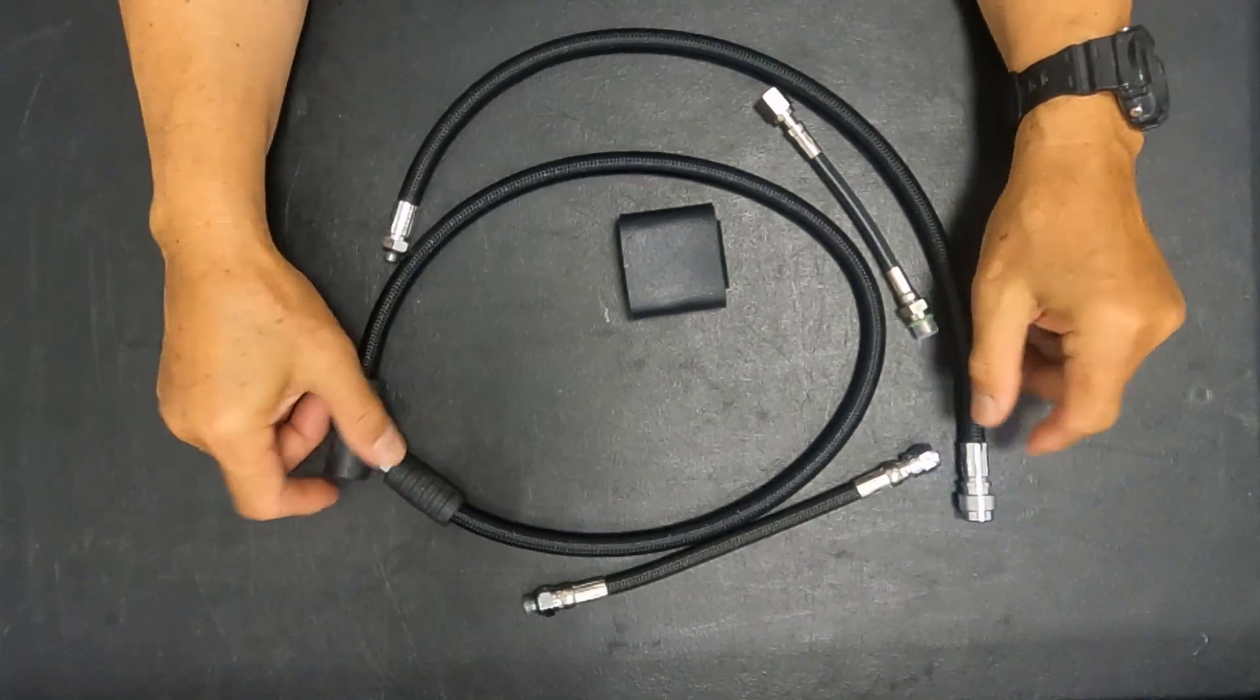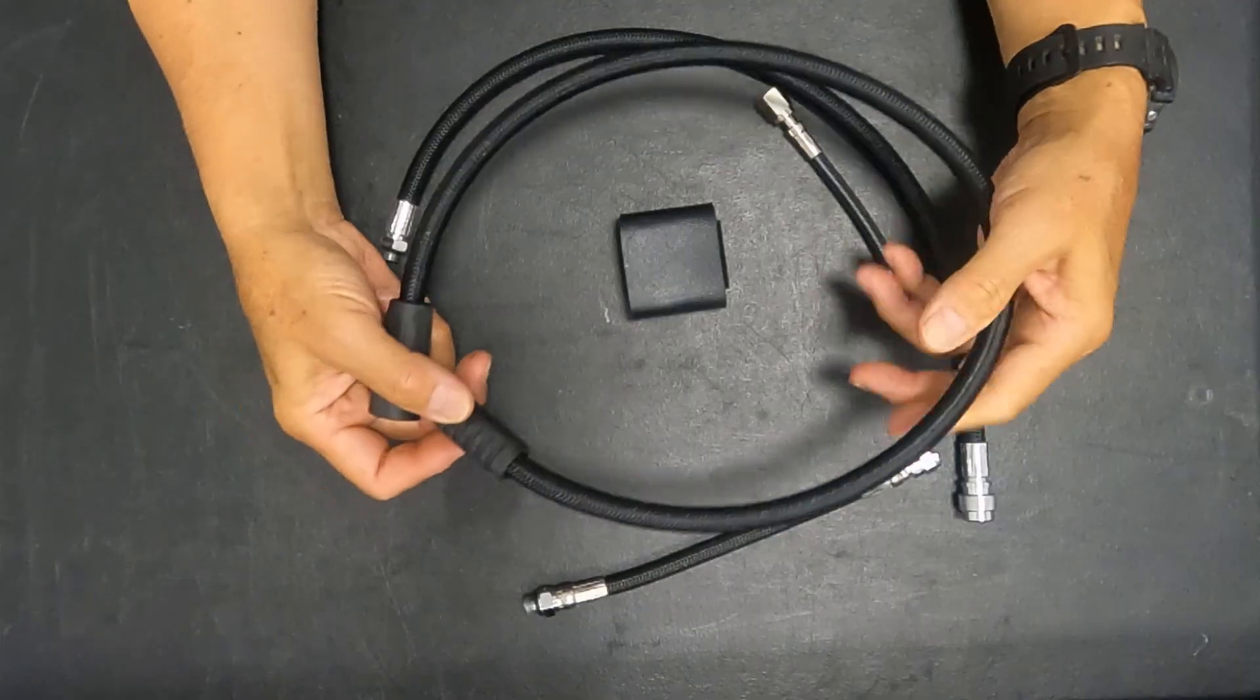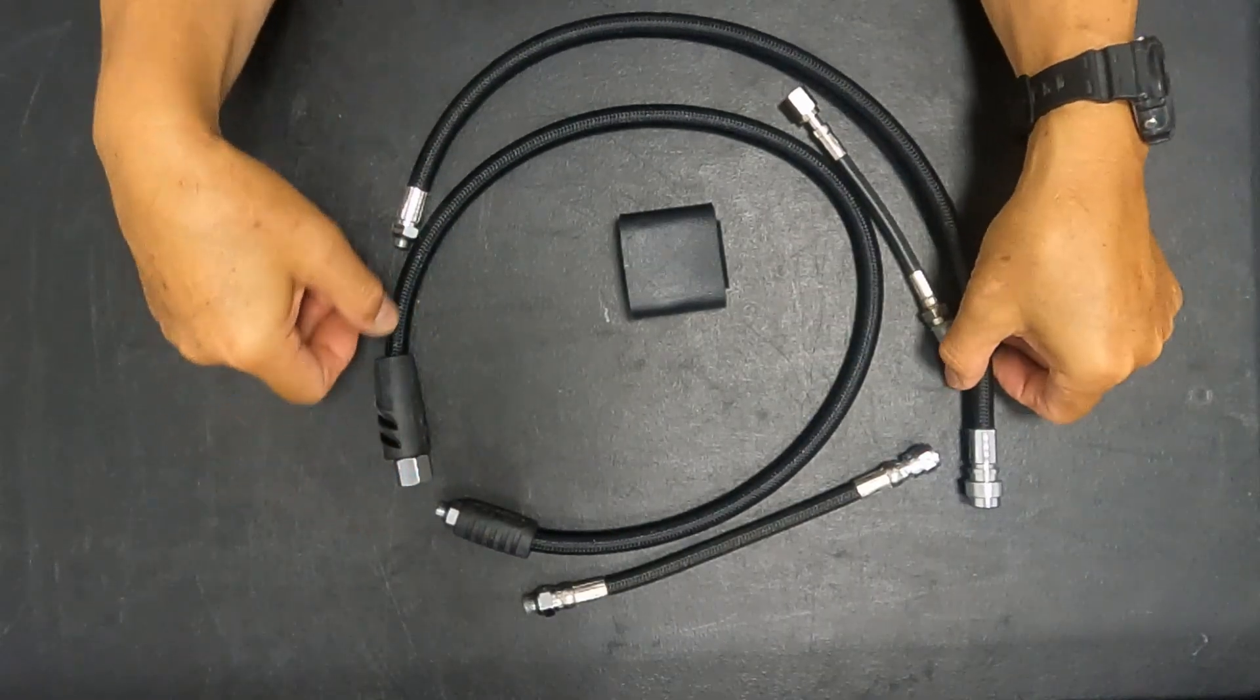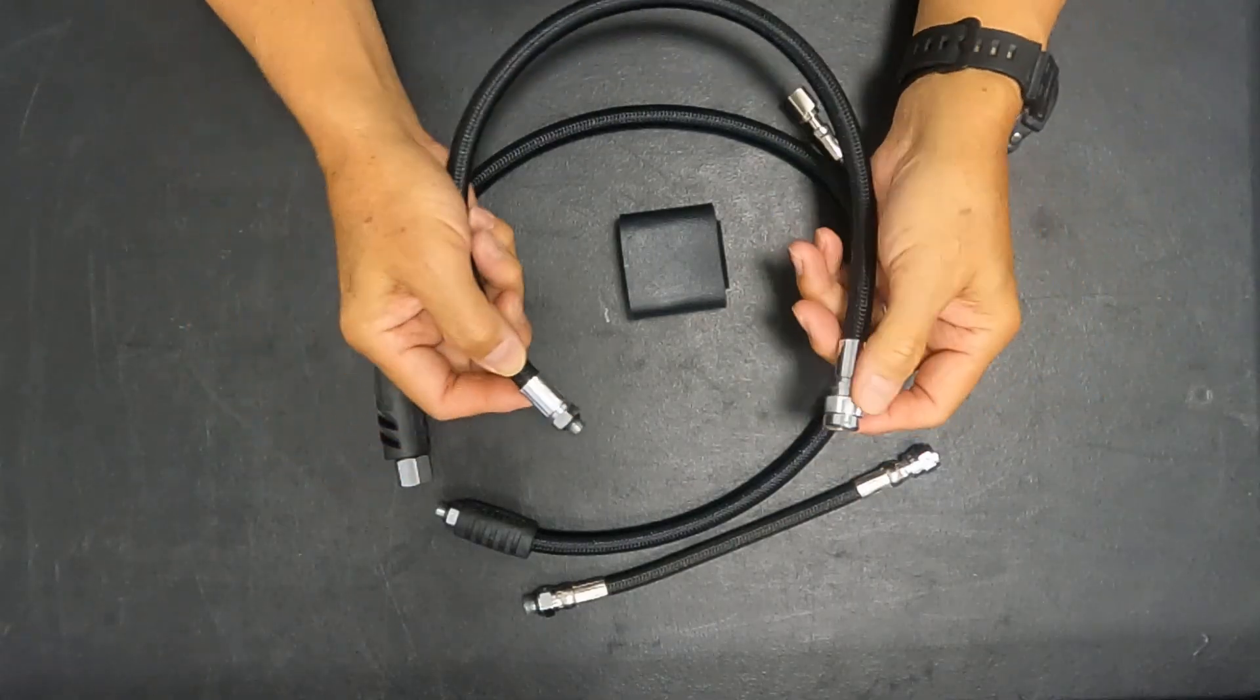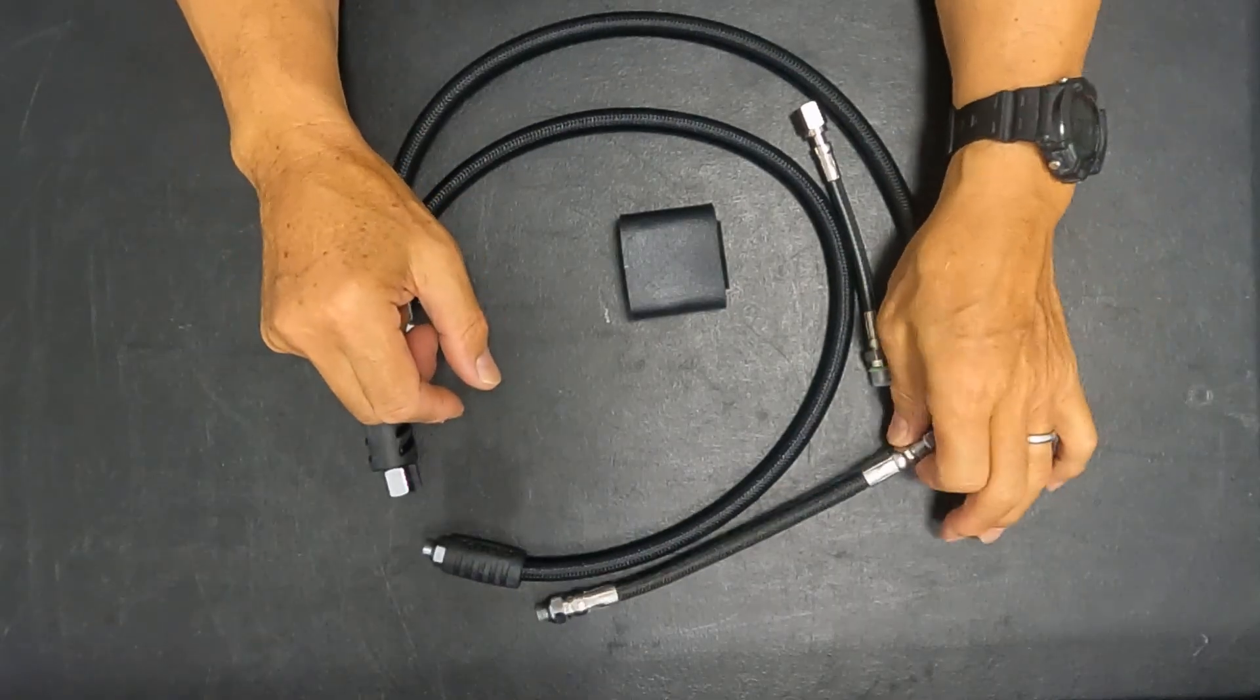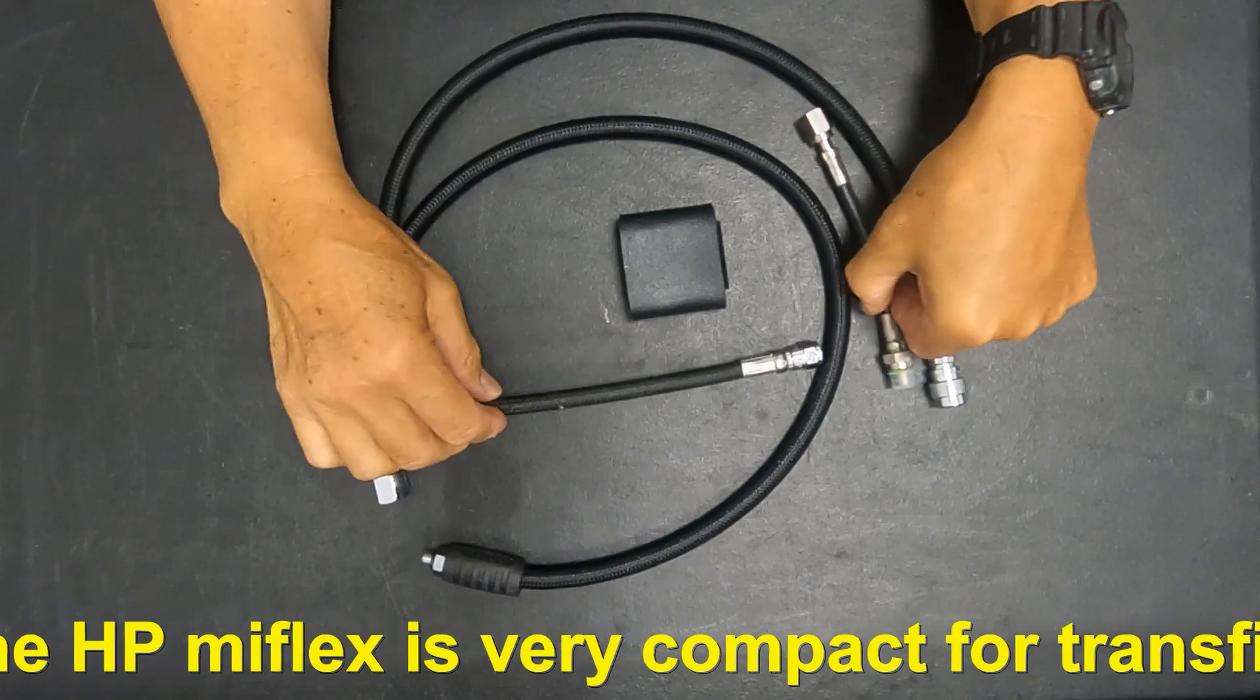they have three basic applications for scuba diving. So one application, of course, the one we're discussing is the use of the braided hose for a regulator. This is a normal length one. And then there's also the use of the braided hose for inflators. This is a low pressure inflator hose for a BCD. And then the third application is for a high pressure gauge hose.